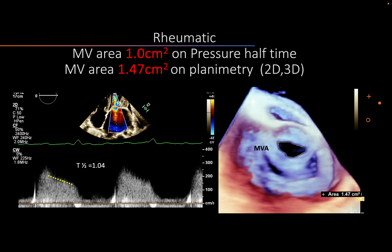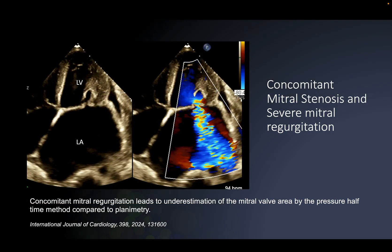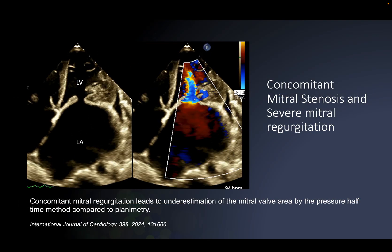A case of mitral stenosis of rheumatic origin with a disparity between pressure half time and planimetry for mitral valve area. By pressure half time, the area is around 1.0, while by planimetry done on 2D and 3D, the mitral valve area is more than 1.4. Why is there a disparity? I am going to show you that the commonest reason for this disparity is severe concomitant mitral regurgitation.